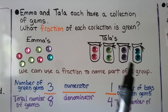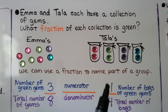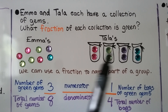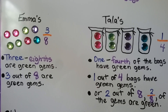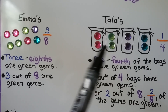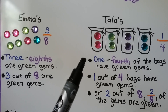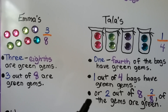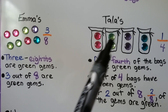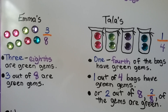For Tala's gems, because she has them in bags, we can say one bag has green gems out of four total bags. We could also say she has two green gems out of eight gems — she has two eighths, which we can also say is one fourth. Emma's is three eighths green — three out of eight are green gems. For Tala's, one fourth of the bags have green gems, or two eighths if we don't consider the bags. One fourth and two eighths is the same amount.